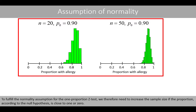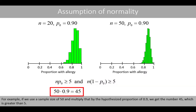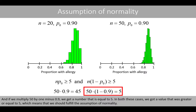To fulfill the normality assumption for the one-proportion Z-test, we need to increase the sample size if the proportion according to the null hypothesis is close to 1 or 0. By using the guideline that expected frequencies must be at least 5, we can assume sample proportions are approximately normally distributed. For example, with a sample size of 50 and a hypothesized proportion of 0.9: 50 times 0.9 equals 45, which is greater than 5; and 50 times (1 minus 0.9) equals 5, which meets the threshold. Both values are greater than or equal to 5, so the normality assumption is fulfilled.